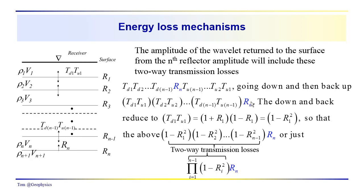The interpreter would ideally like, in their seismic section, to see reflection events proportional to the reflection coefficient. These paired terms of transmission coefficients are basically equal to — by definition — TD1 is equal to 1 plus R1. Since the sign of the reflection coefficient changes when we come back up, R1 going up is the negative of R1 going down. We have the product 1 plus R1 times 1 minus R1, which equals 1 minus R1 squared. So this series of two-way transmission losses becomes a series of factors: 1 minus R1 squared times 1 minus R2 squared, and so on.